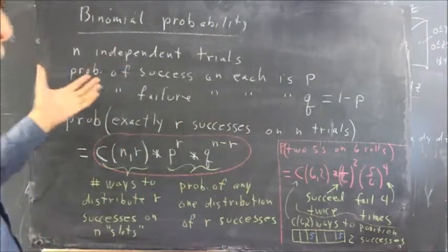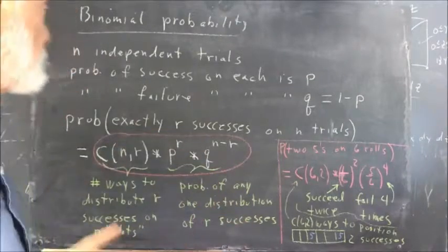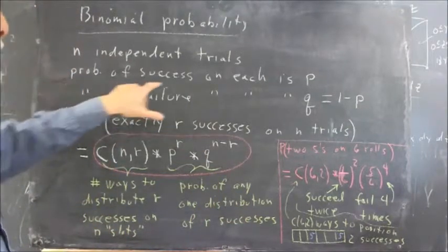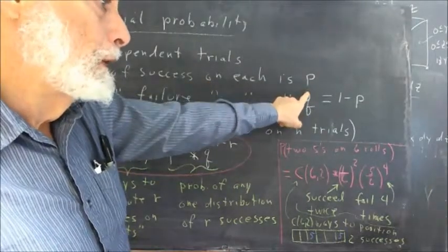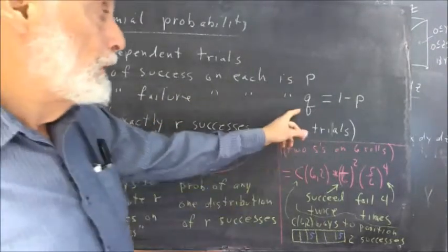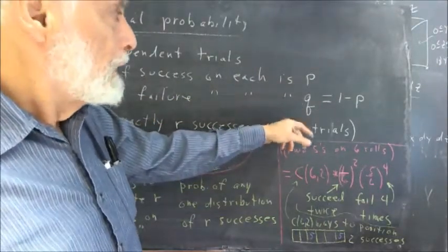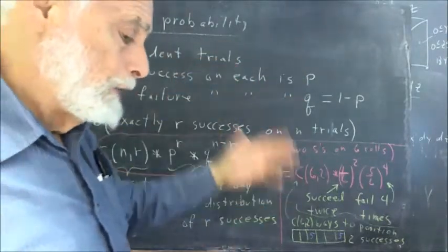A success, in the examples that we've seen, would be getting a five. The probability of a success on each trial, we're going to denote by P. The probability of a failure, we're going to denote by Q. And since it's either success or failure, this is black and white, no gray. It either is or is not, in this case, a five.